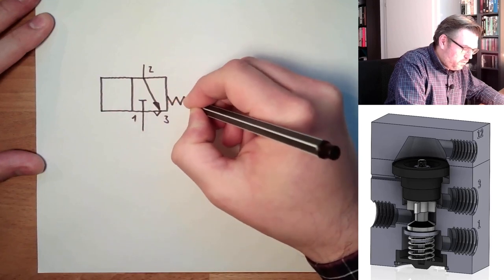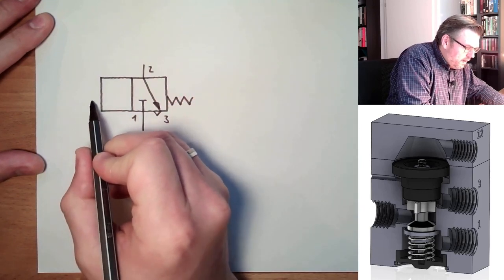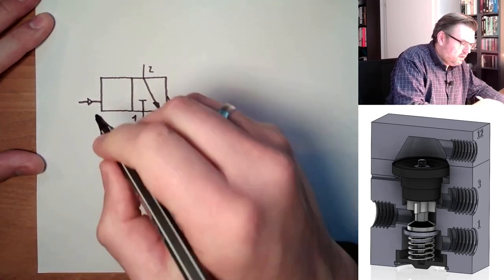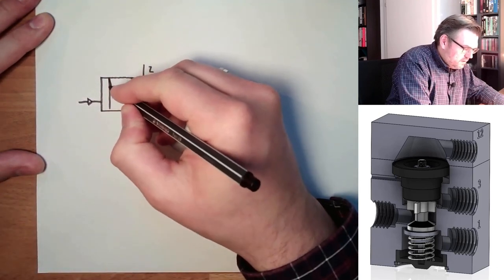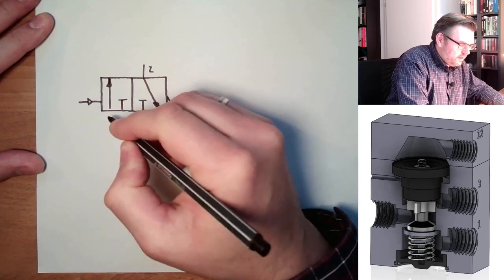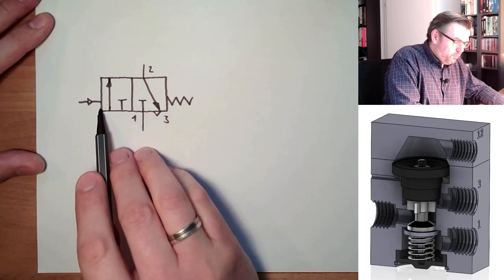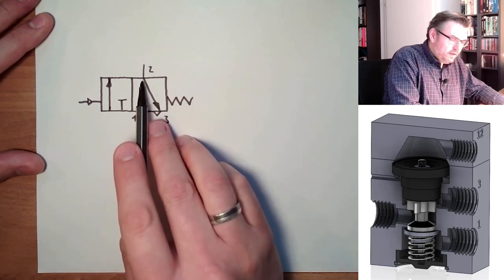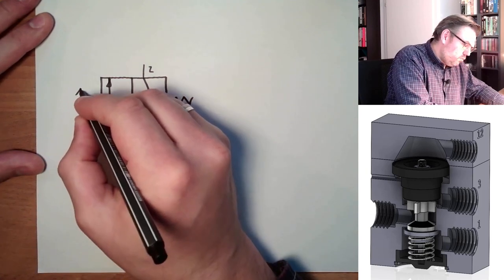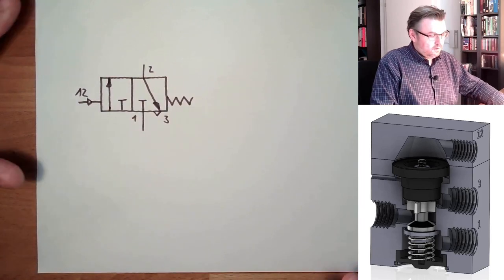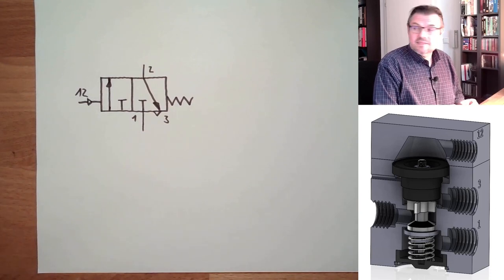On one side it's spring-loaded, and on the other side it's pneumatically operated. And the second switch position looks like this. So this means if I put pressure here, one and two will get interconnected. So this is the one-two connector. This is the symbol of exactly that valve.